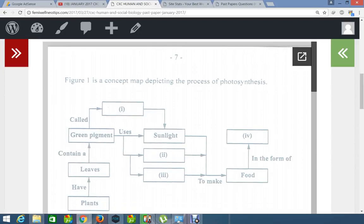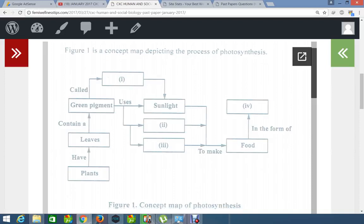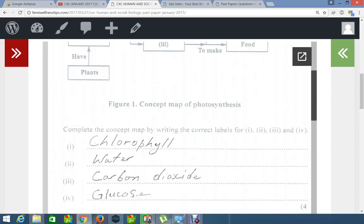Now, as for this question, testing your knowledge as to the first part of the syllabus, Figure 1 is a concept map depicting the process of photosynthesis. As students can see, this map is completely different from what your teacher would have taught you, but once you know the concept, you should be able to go through this map. What I'm going to do now is complete the concept map by writing the correct label for those sections.